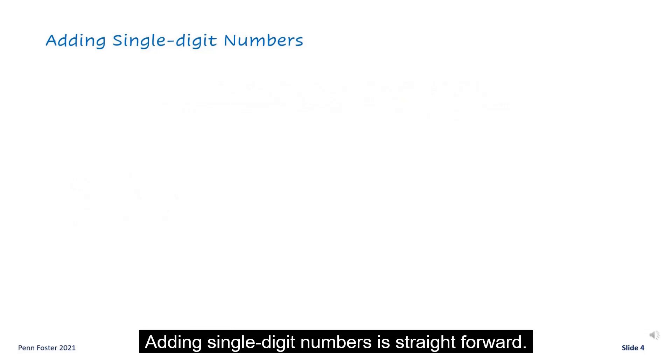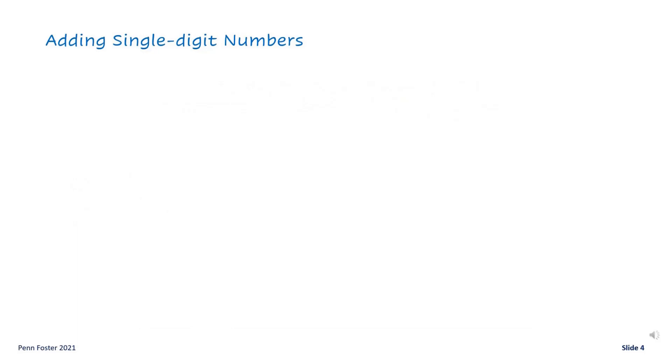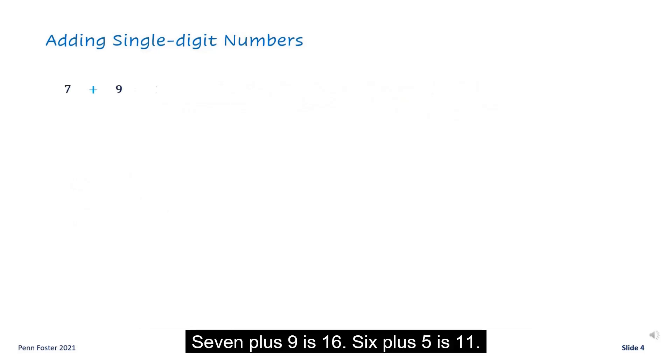Adding single-digit numbers is straightforward. Seven plus nine is sixteen. Six plus five is eleven. Adding skills get better by practice.